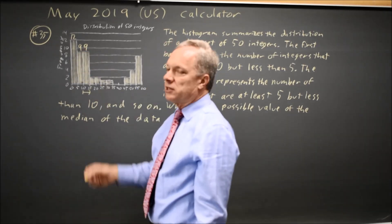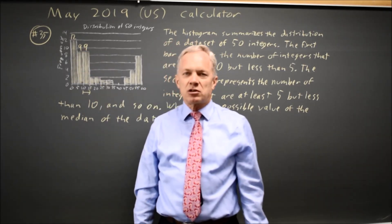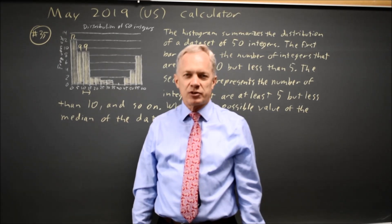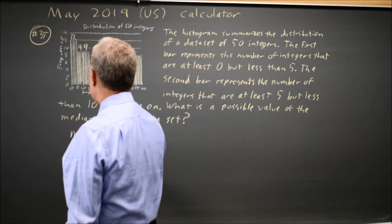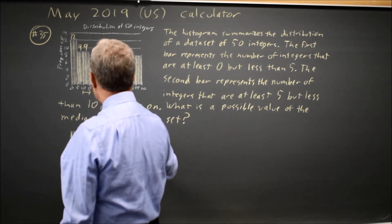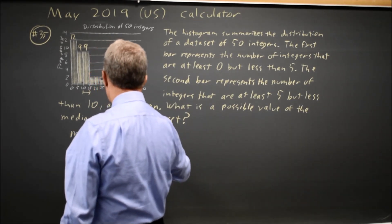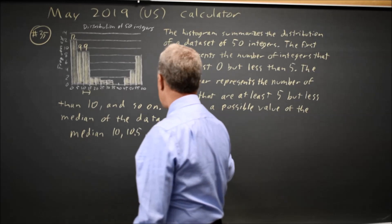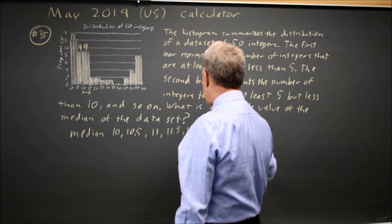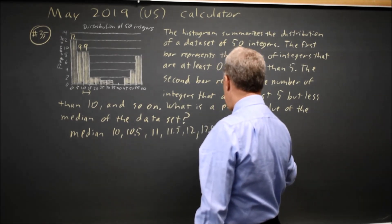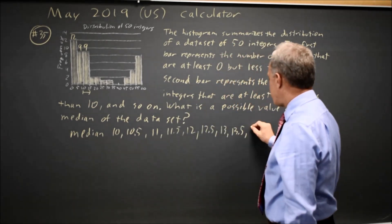So the two middle numbers are 10, 11, 12, 13, or 14. And so the median could be 10, 10.5, 11, 11.5, 12, 12.5, 13, 13.5, or 14.